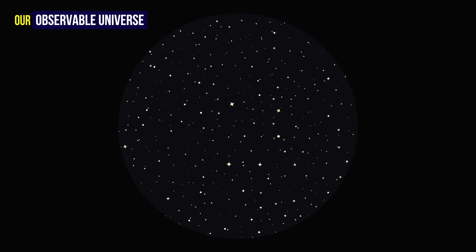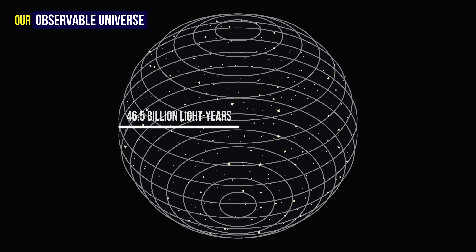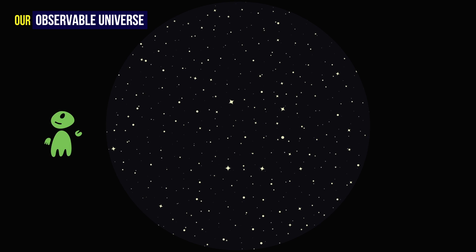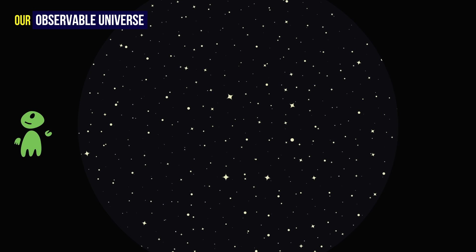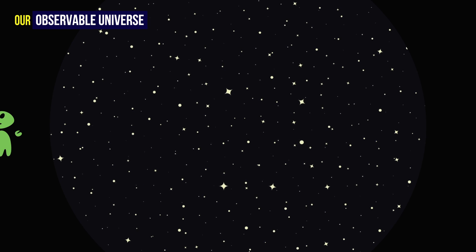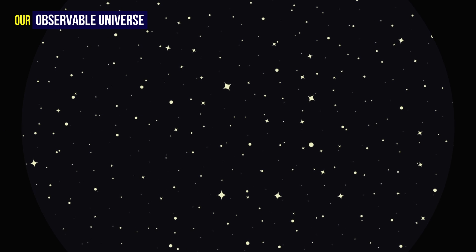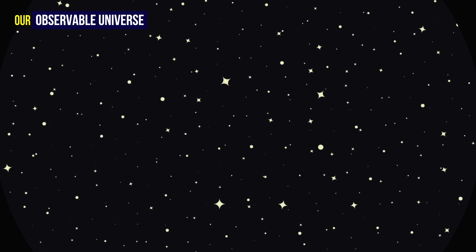So, our observable universe is a sphere with a radius of 46.5 billion light-years, and it is expanding with the universe. Unfortunately, this doesn't mean that more distant objects are observable over time, because they are pushed away at the same rate the observable universe expands.